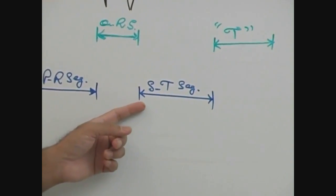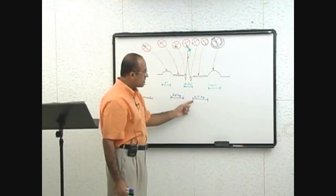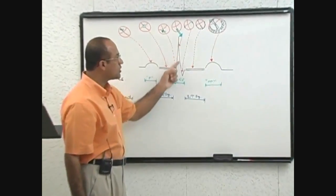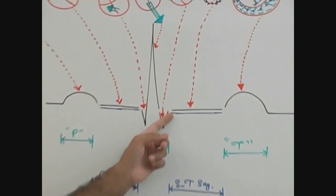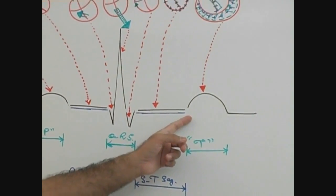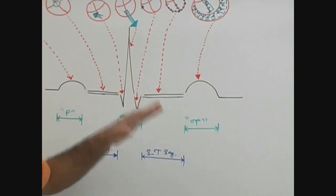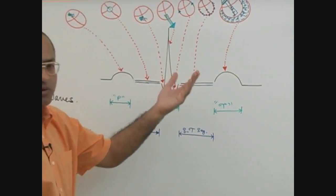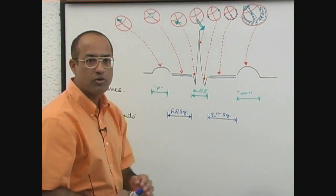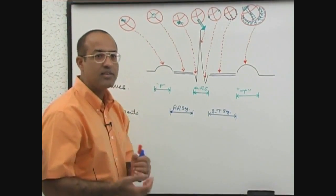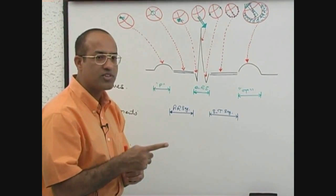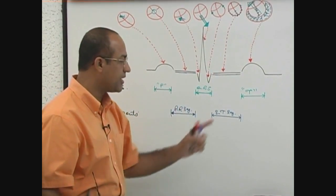The ST segment is the straight line drawn when the spread of ventricular depolarization is terminated and yet the rapid phase of depolarization has not started. There is a plateau phase where cations are going into the cell as well as coming out, so no significant electrical changes occur. Electrodes do not record any significant electrical activity, and the needle remains static, making a straight line.